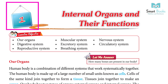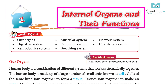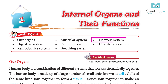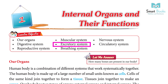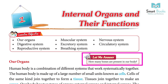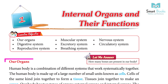Chapter 1: Internal Organs and Their Functions. Learning objective: our organs — muscular system, nervous system, digestive system, excretory system, circulatory system, reproductive system, and breathing system. How many organ systems are present in our body?